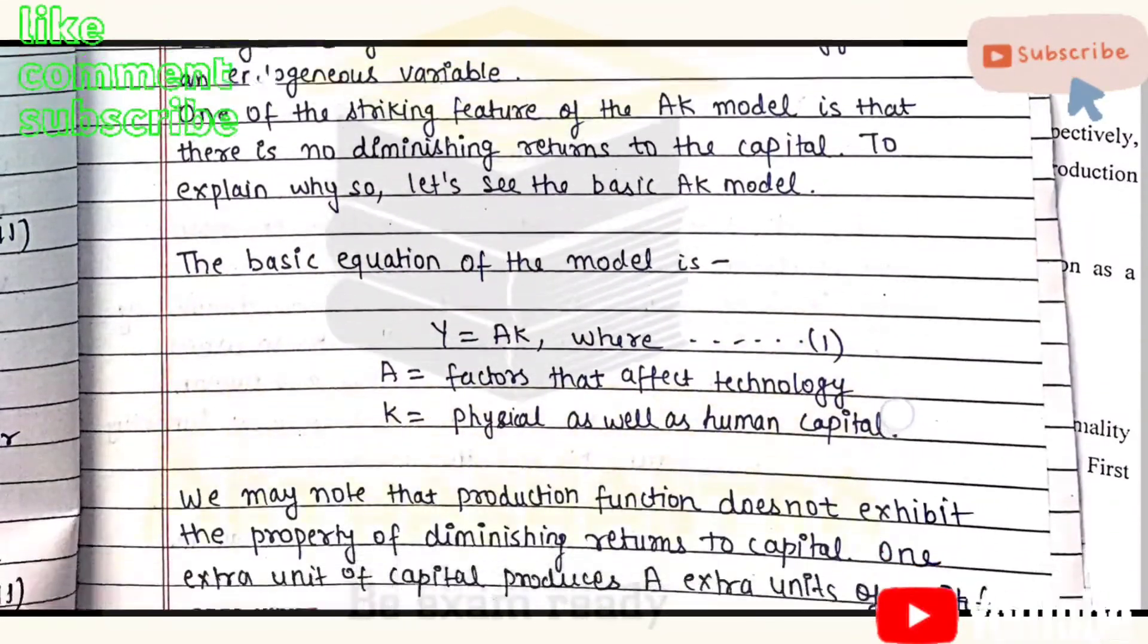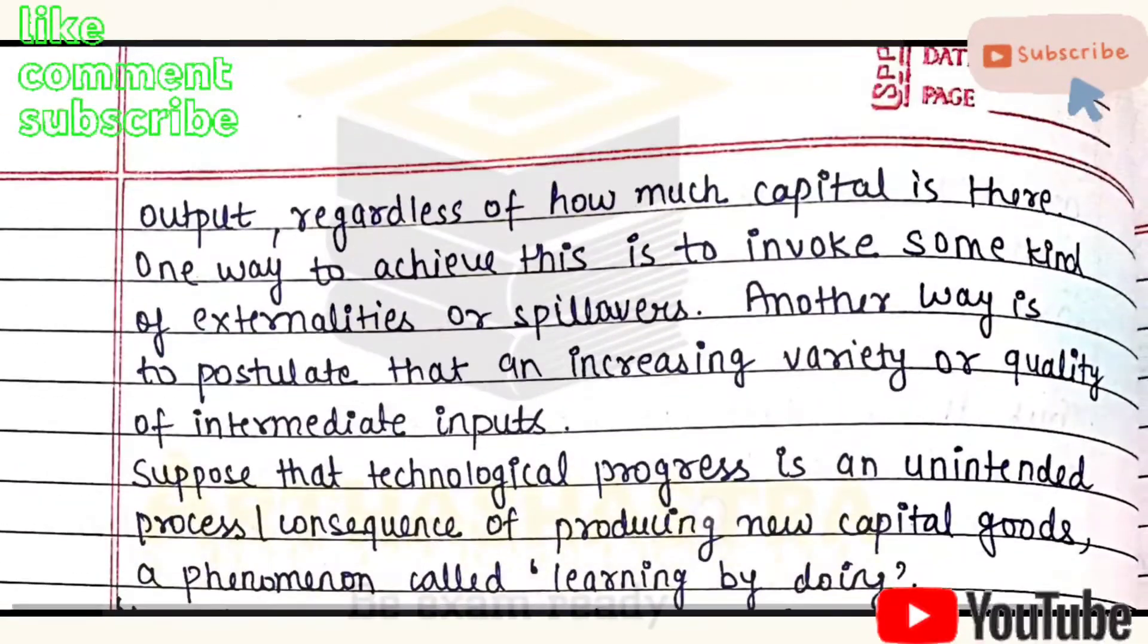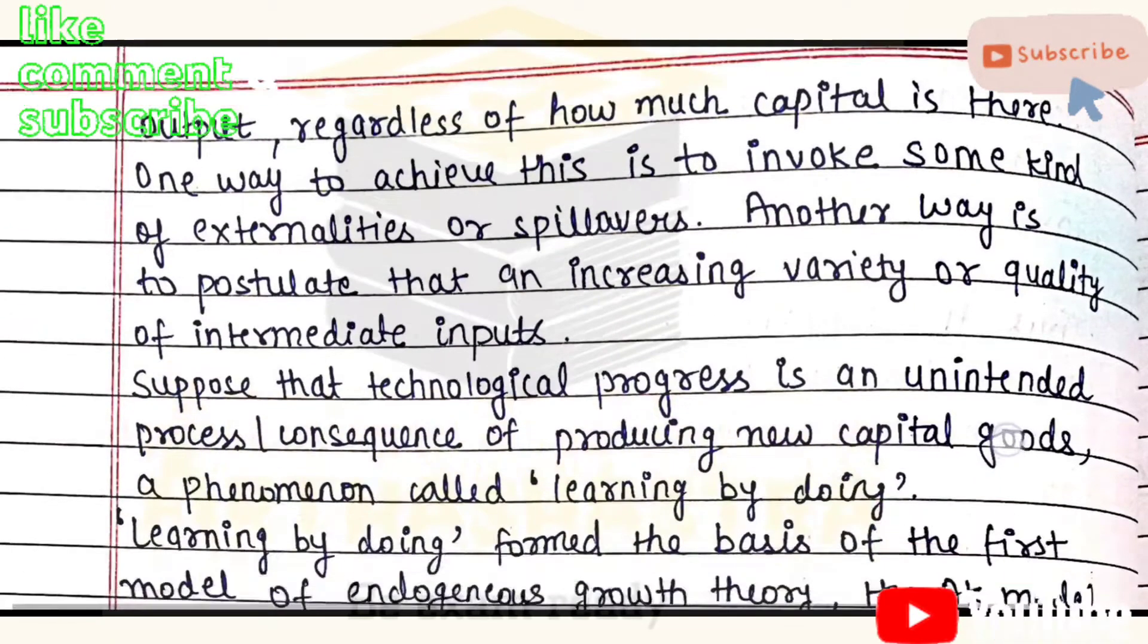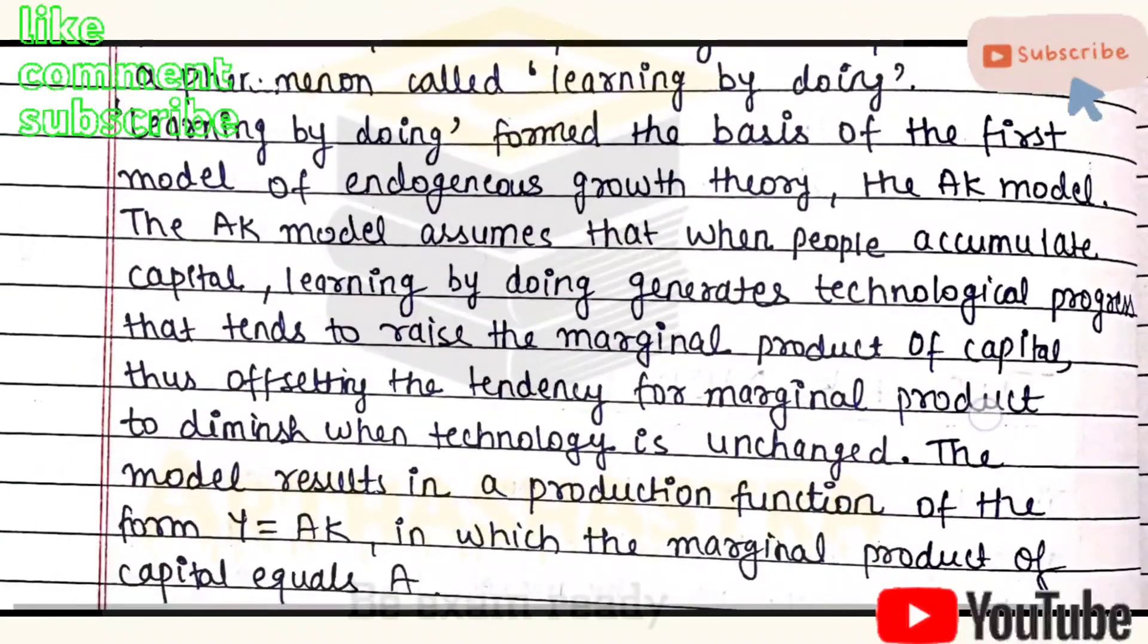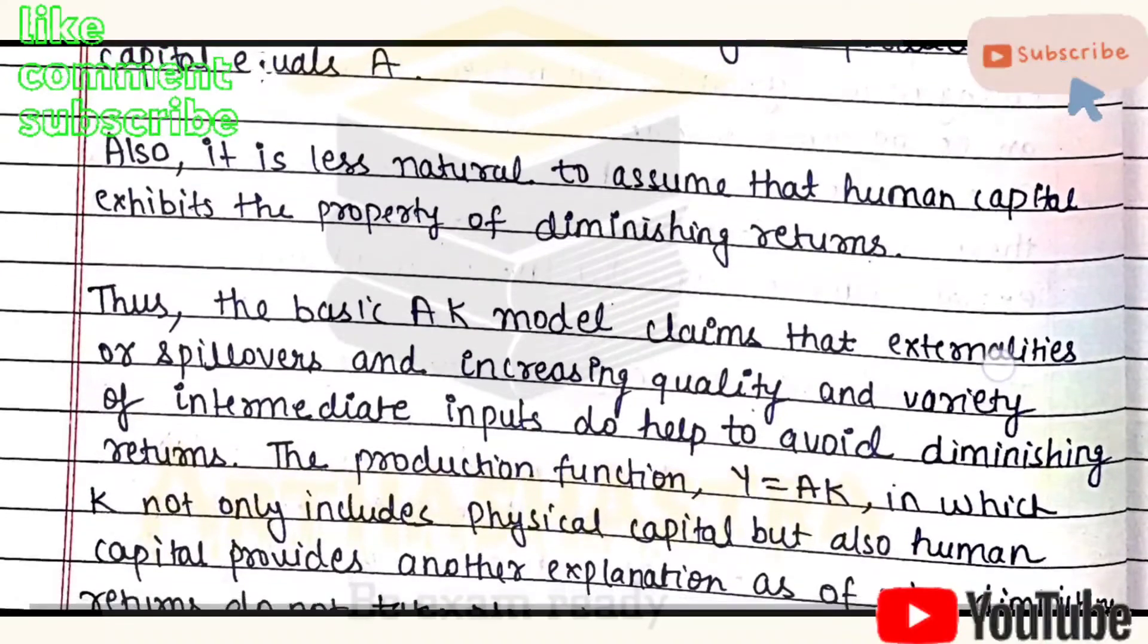On the other hand, exogenous variables are those which are determined outside the model. This model essentially states that human capital, that is the skills, improvement in skills, education, builds up the human capital and it helps to improvement in technique and leads to technical progress. So technological progress is not exogenous, rather it is endogenous. The concept used to explain is learning by doing, and it is the very first model of endogenous growth theory, the basic AK model.